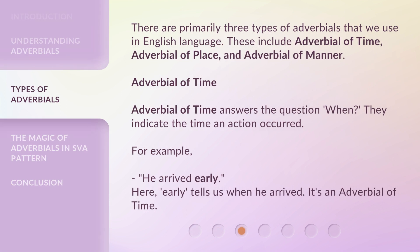There are primarily three types of adverbials that we use in English: adverbial of time, adverbial of place, and adverbial of manner. Adverbial of time answers the question when — they indicate the time an action occurred. For example, he arrived early. Here, early tells us when he arrived. It's an adverbial of time.